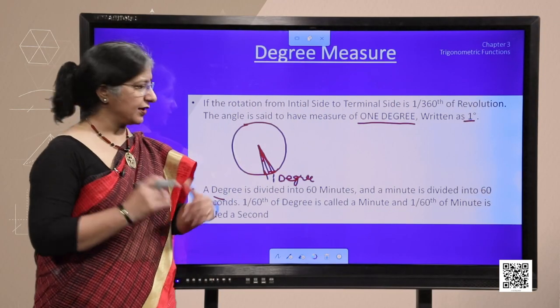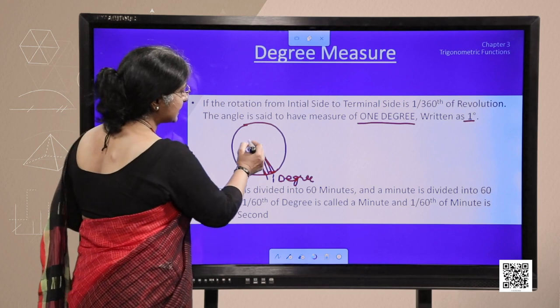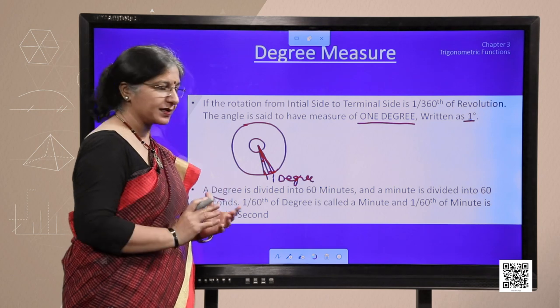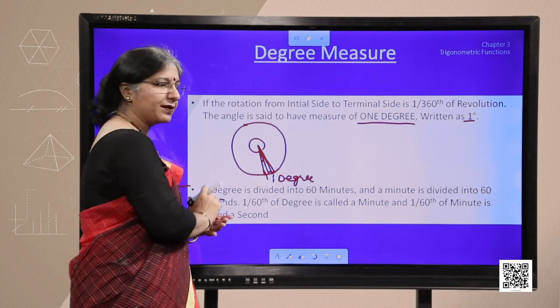To explain it further, if we consider this as a clock, we divide one complete hour into 60 minutes, 60 parts and each part is called 1 minute.